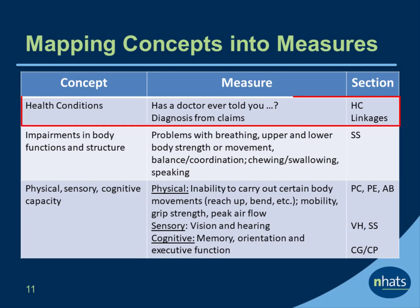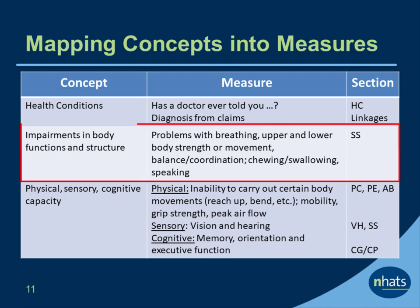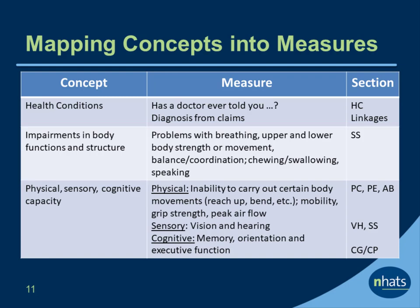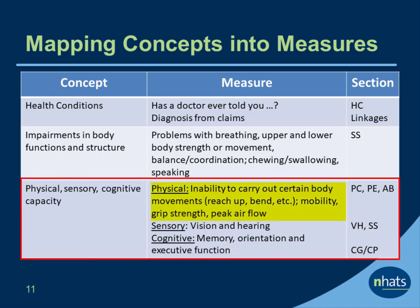For health conditions, measures include a series of items that ask 'has a doctor ever told you?' Diagnoses are also available through linkages to Medicare claims. Measures of impairments in body functions and structures include problems with breathing, upper and lower body strength or movement, balance and coordination, and chewing, swallowing, and speaking. Measures of physical capacity include the self-reported ability to carry out basic body movements and performance-based measures of mobility, grip strength, and peak airflow.